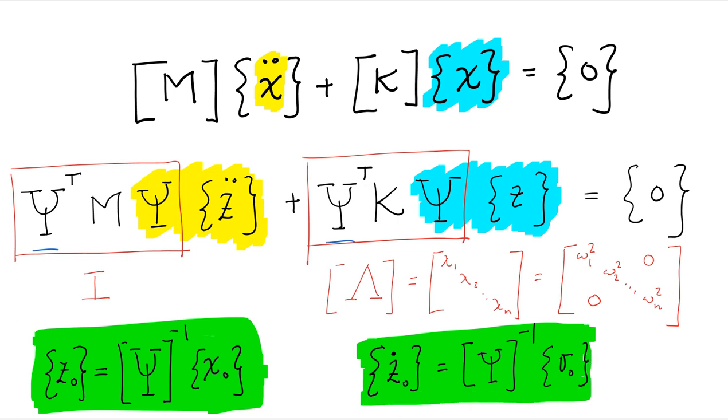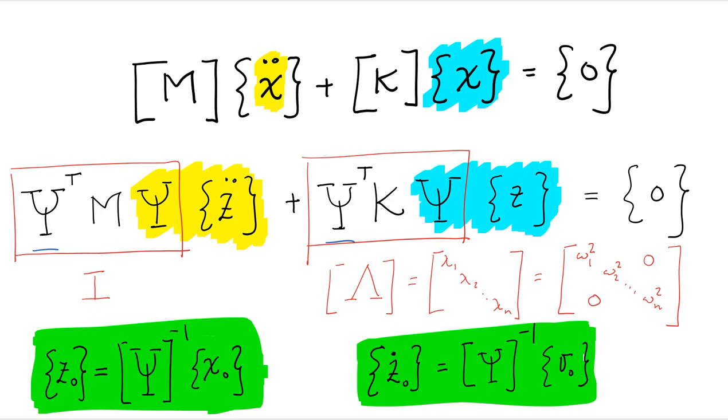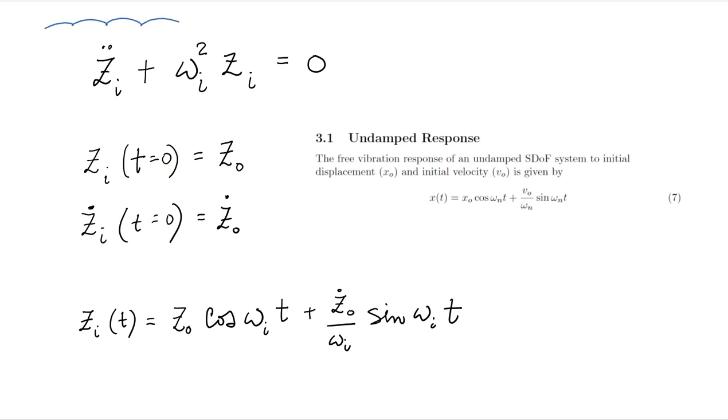We can then take each one of these equations, as you may see from here, since this is the identity on phi transpose m phi, and this other matrix phi transpose k phi is diagonal. When you look at each one of these equations, basically what has happened is that these equations have become decoupled. And now, instead of having an n by n coupled system of equations, we have n uncoupled equations.